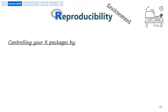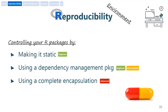Moving up to the environment, we basically need a way to control it as much as possible. There are three main strategies: one is to make it static, the second is using a dependency management package, and the third option — which is the more complex — is to encapsulate the entire environment. I will talk on each separately.